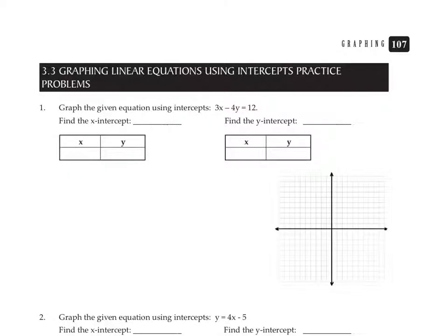We're working on graphing these equations using intercepts. These are some extra practices from Al Groesch's book, Developmental Math 2. The intercepts are the places where the graph crosses the x and y axes. To find the x-intercept, you substitute zero for y. To find the y-intercept, you substitute zero for x. That gives you two ordered pairs, which can create your graph.